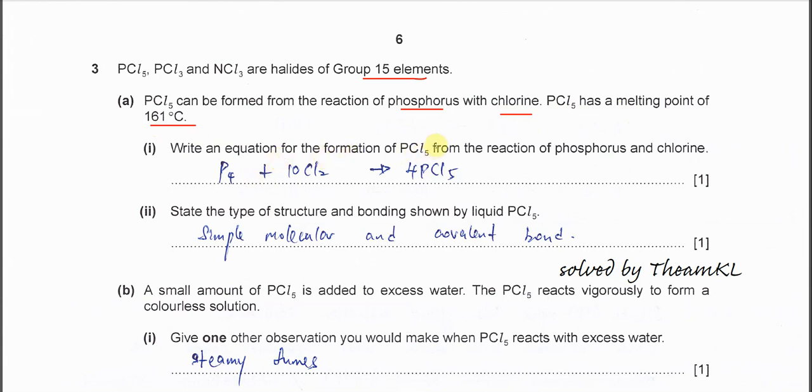Part 1: Write an equation for the formation of PCl5 from phosphorus and chlorine. You can give P or P4. Normally we put P4. P4 with Cl2 forms PCl5. You just balance it, so you get this equation.